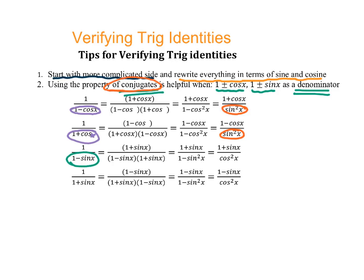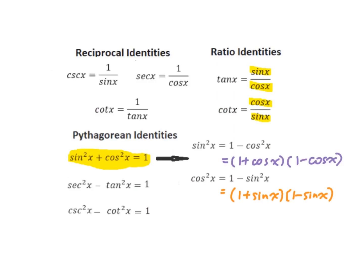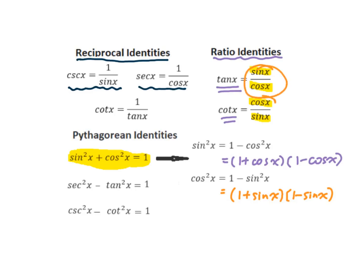When 1 minus sine x and 1 plus sine x are a denominator, after conjugate multiply you are supposed to get cosine squared x as a denominator. When verifying trig identities, remember the following identities: reciprocal identities, especially for cosecant and secant changing to sine or cosine; ratio identities for tangent x and cotangent x using sine and cosine; and Pythagorean trig identities, which are the most important.